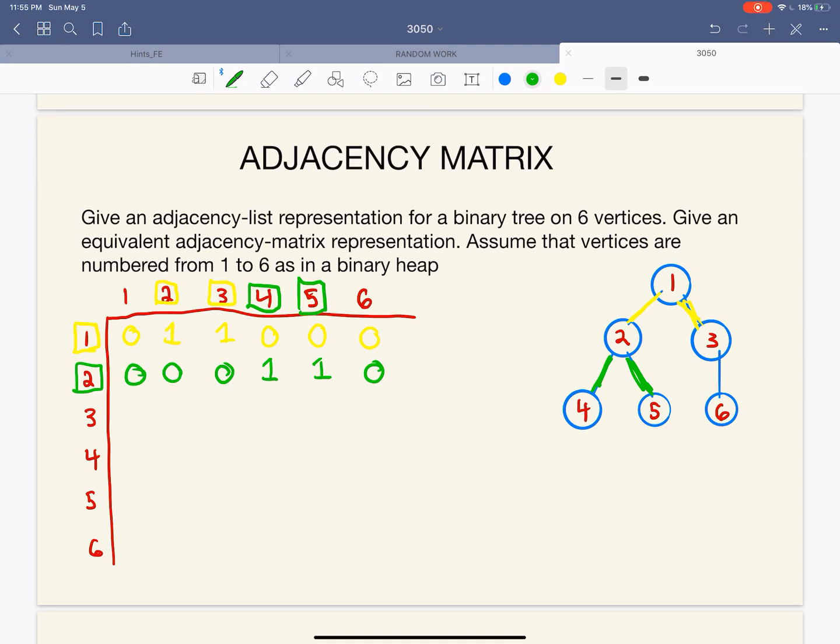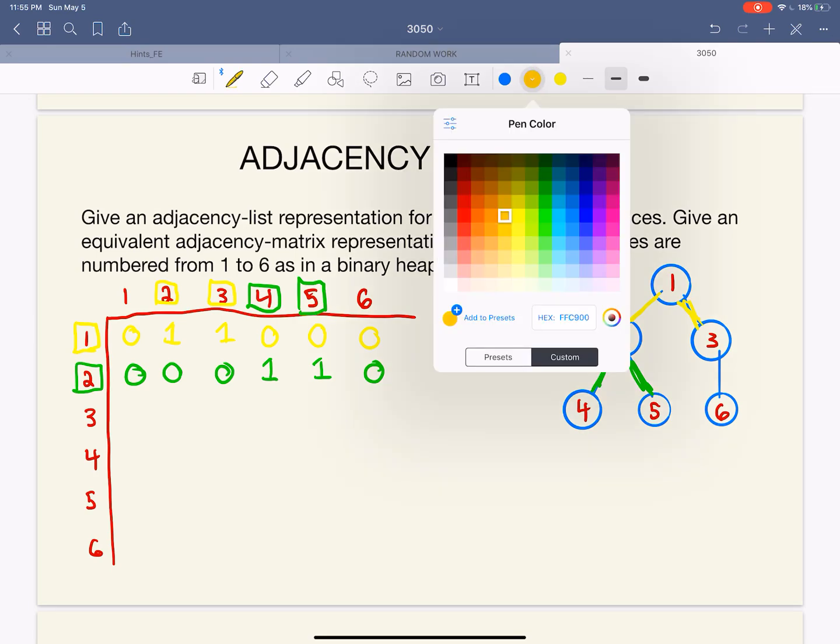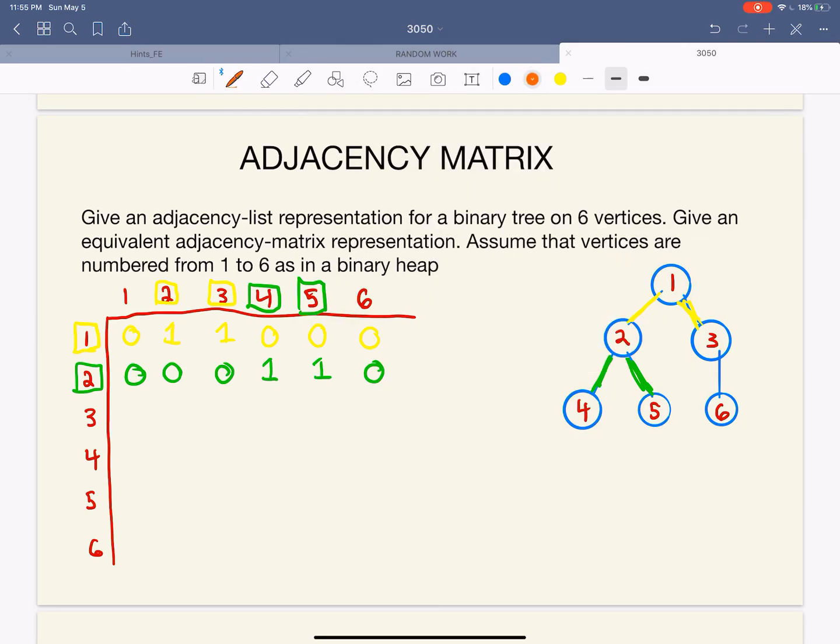And then let's go to three now. Three is just connected to six, so we're going to find three in a row. We're going to find six in the column. We're going to put a one right there and fill the rest in with zeros.